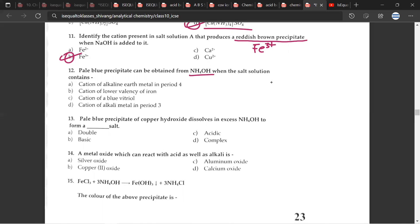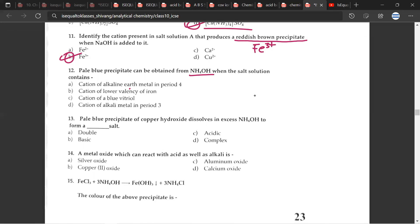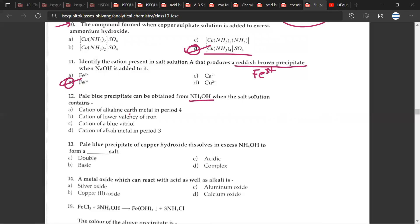Pale blue precipitate can be obtained from NH4OH when the salt solution contains what? So the correct answer would be C, cation of a blue vitriol. Pale blue precipitate of copper hydroxide or Cu(OH)2 dissolves in excess NH4OH to form a dash salt. So it forms a complex salt.